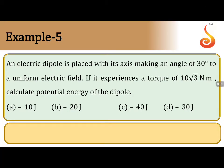An electric dipole is placed with its axis making an angle of 30 degrees to a uniform electric field. If it experiences a torque of 10 root 3 Newton meter, then what would be the potential energy of the dipole?